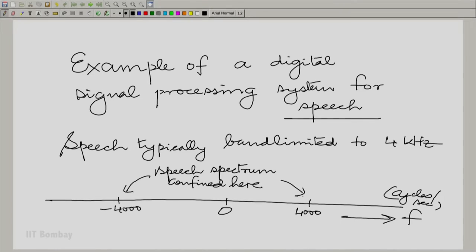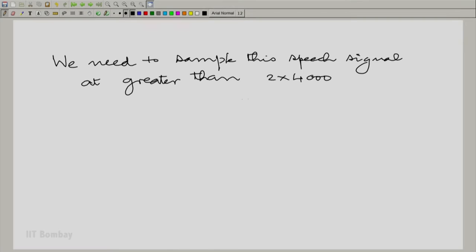Now, we have been talking about sampling and reconstruction. We can put down a requirement on sampling. We need to sample the speech signal at greater than 2 times 4000 or 8000. When I say hertz here, I should rather write samples per unit time.